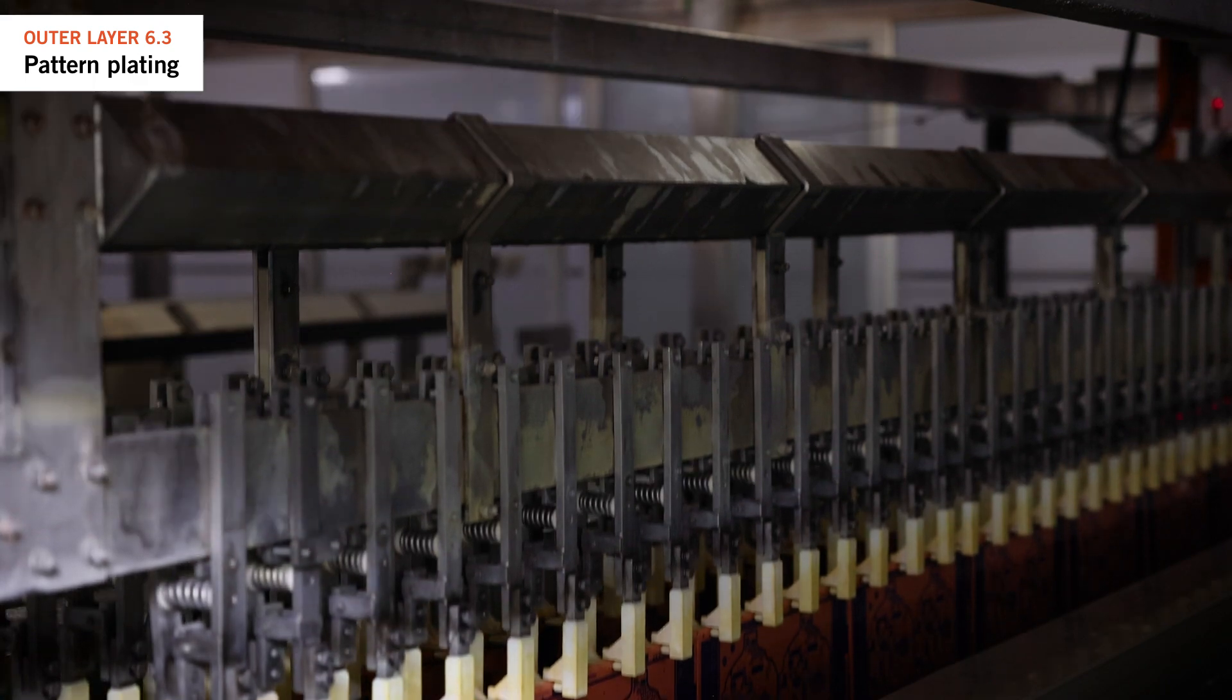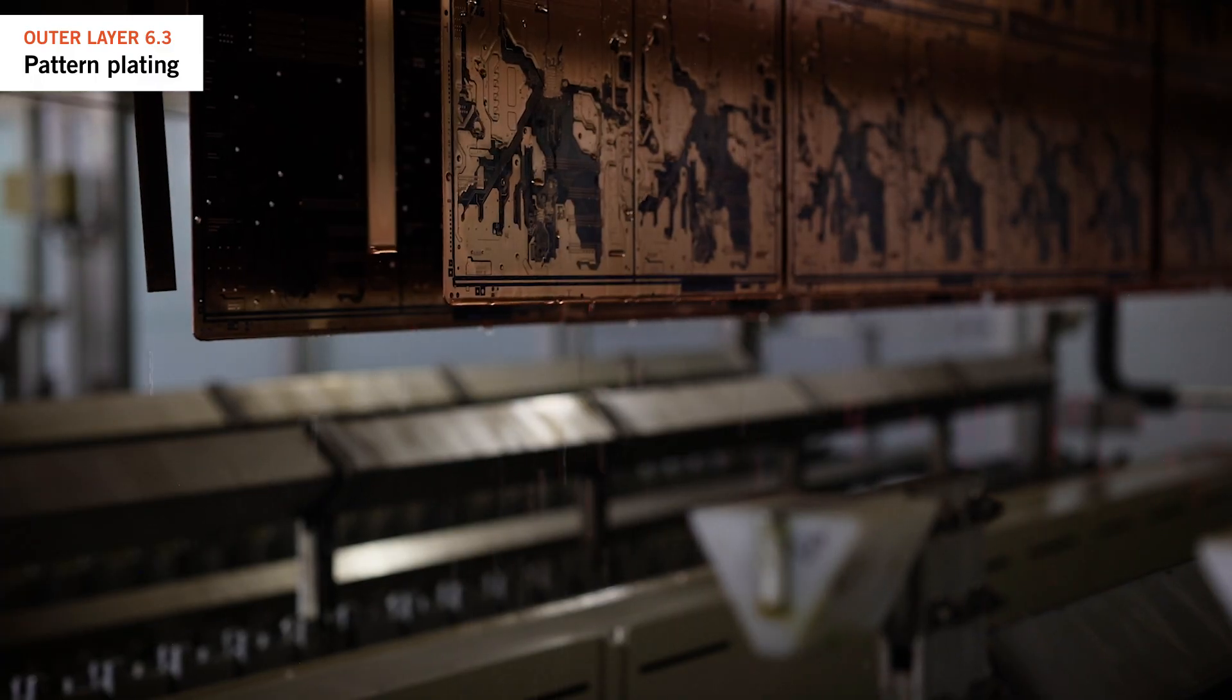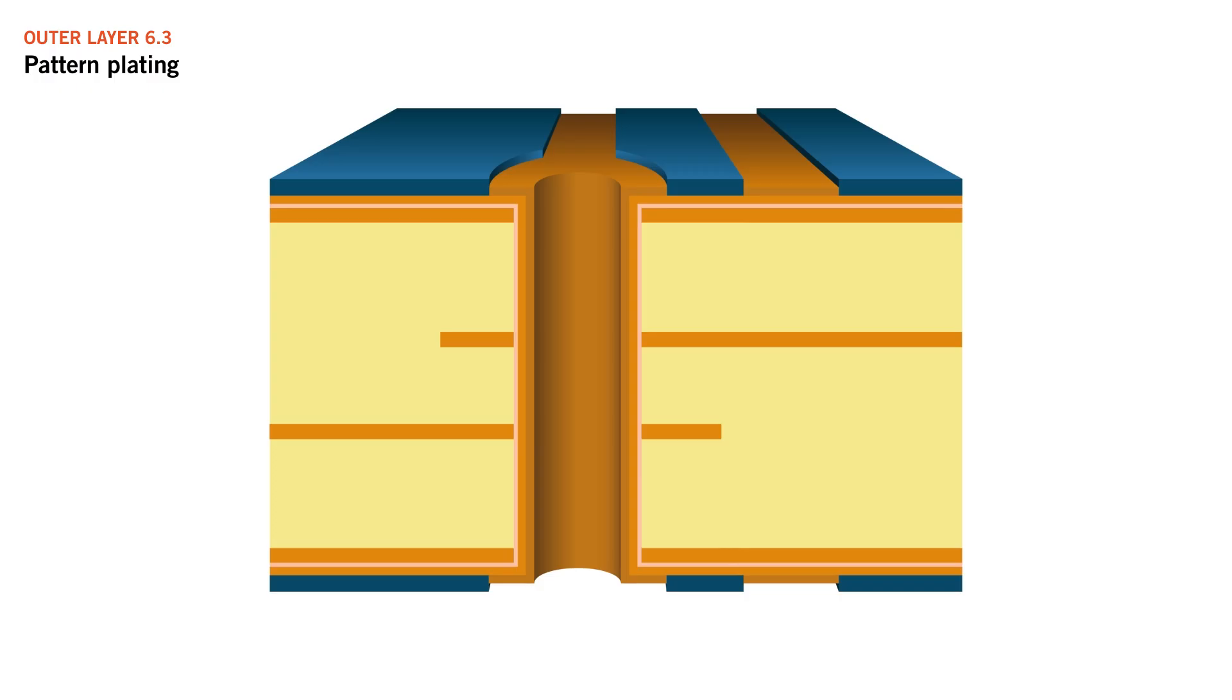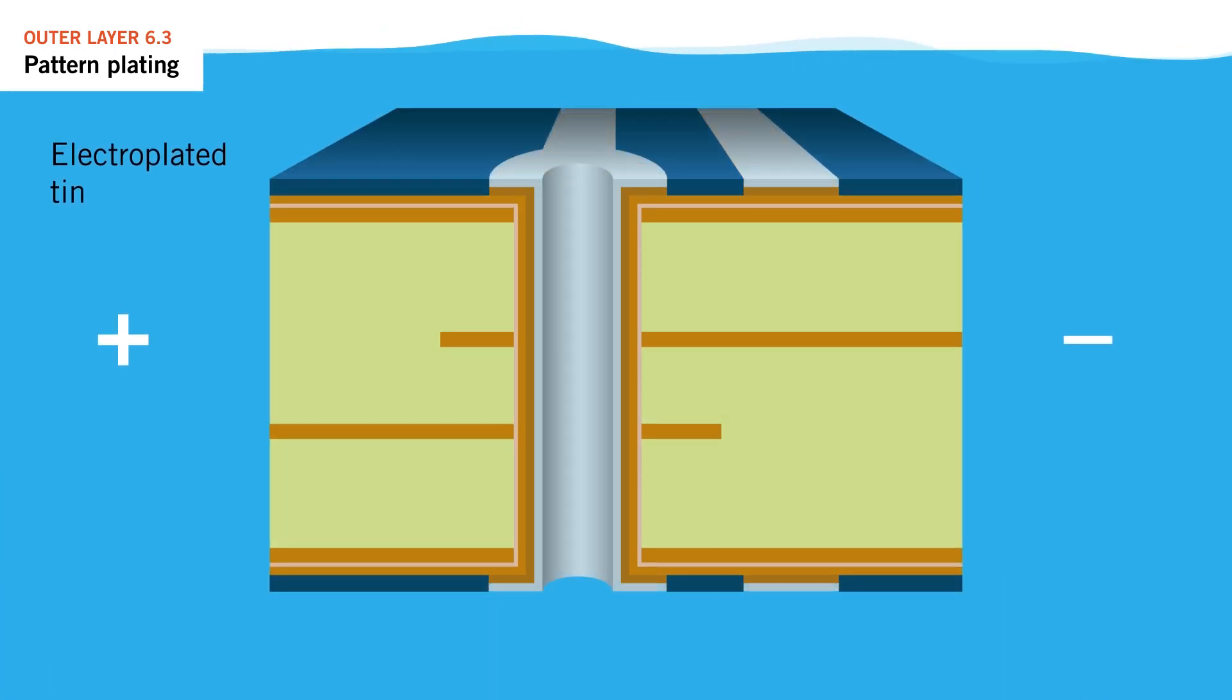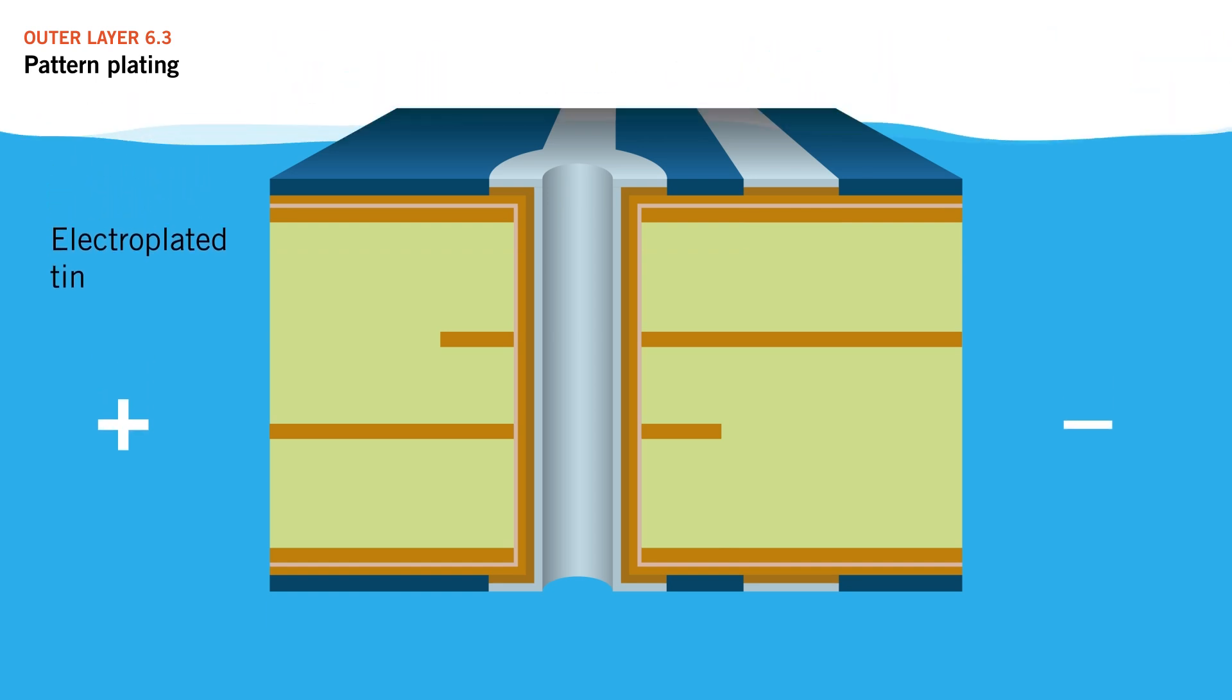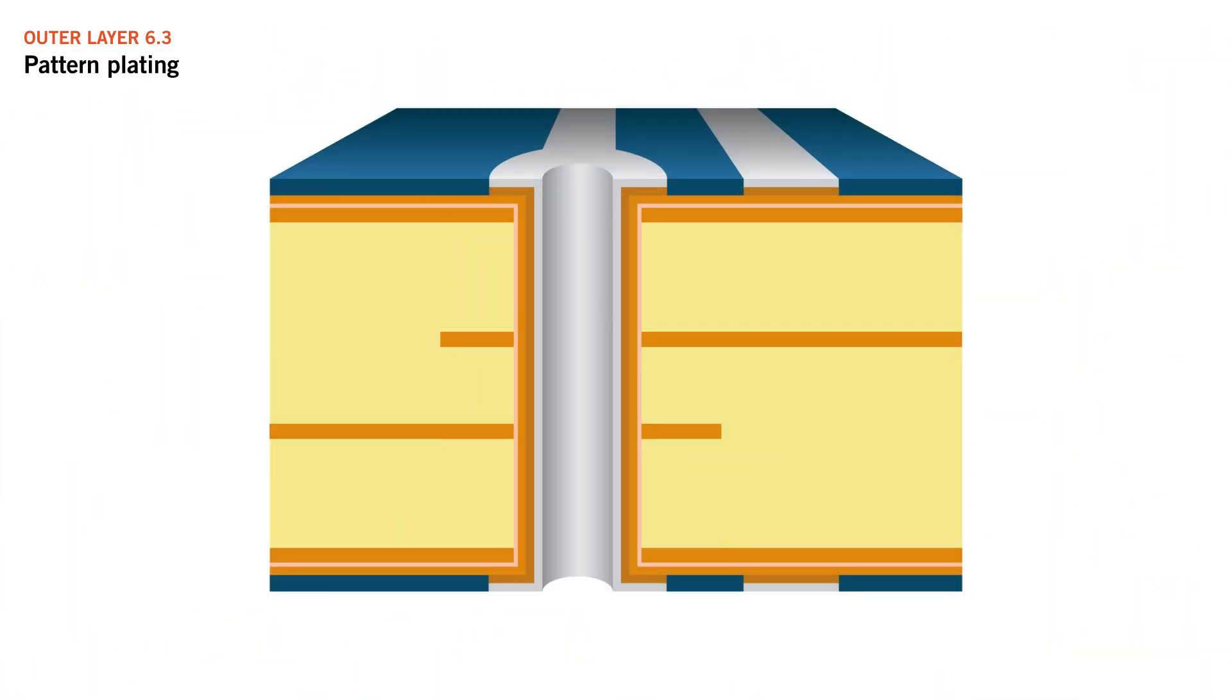Once the additional copper has been plated, then a deposit of tin is applied on top of the plated copper in the same pattern to protect the plated copper underneath during the subsequent processes.